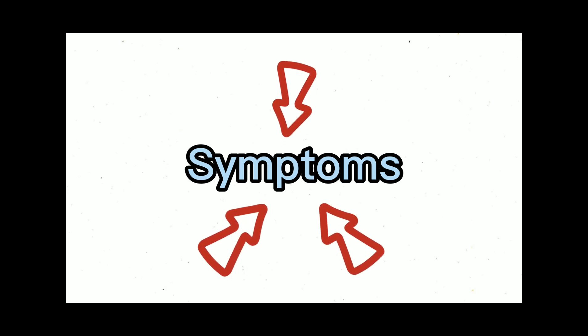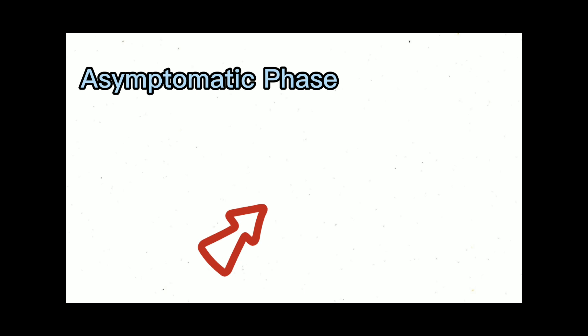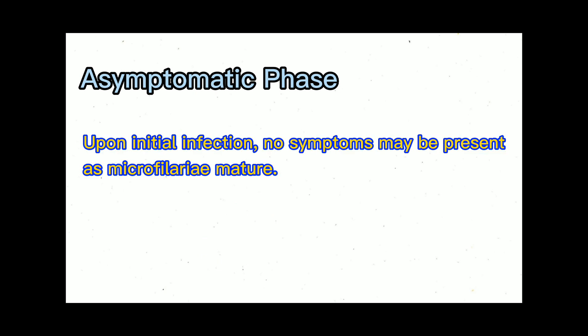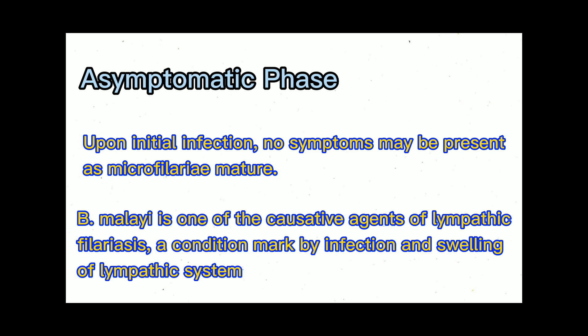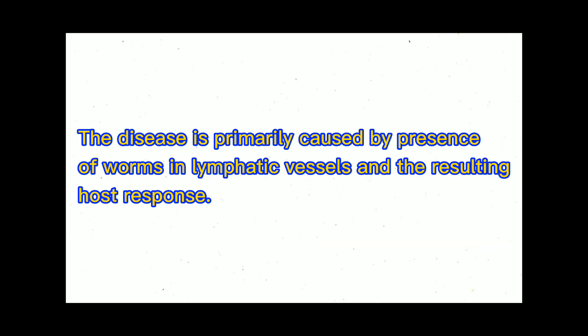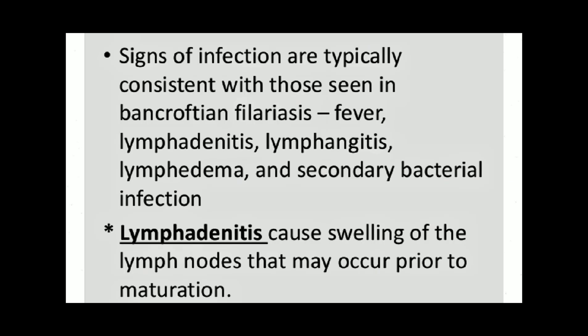Now let's proceed to its symptoms. During the asymptomatic phase, upon initial infection, no symptoms may be present as microfilariae mature. Brugia malayi is one of the causative agents of lymphatic filariasis, a condition marked by infection and swelling of the lymphatic system. The disease is primarily caused by the presence of worms in lymphatic vessels and the resulting host response. Signs and symptoms are typically consistent with those seen in Bancroftian filariasis: fever, lymphadenitis, lymphangitis, lymphedema, and secondary bacterial infection.